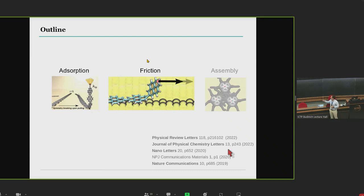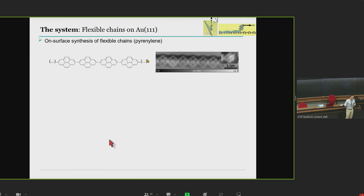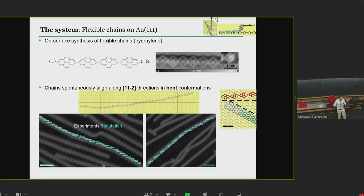The systems I'm going to consider: the first bulk of the talk will deal with adsorption and friction using the same molecule. This is the one that Rémy already mentioned yesterday. We could call it a flexible graphene nanoribbon. We have this polyaromatic structure that is interlinked by a single carbon bond, where you have this bending and torsion. This torsion alone already has some effects. For example, the molecules adsorb along bent conformations. Another thing is that contrary to graphene nanoribbons that align along compact directions, we observed that these molecules are oriented along non-compact directions.